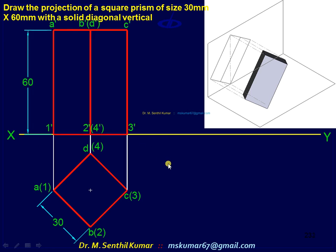Draw the corresponding front view. Now there are four solid diagonals. That is, you can join A dash with 3 dash, C dash with 1 dash, B dash with 4 dash, D dash with 2 dash. Let us say A dash 3 dash, it is one solid diagonal.